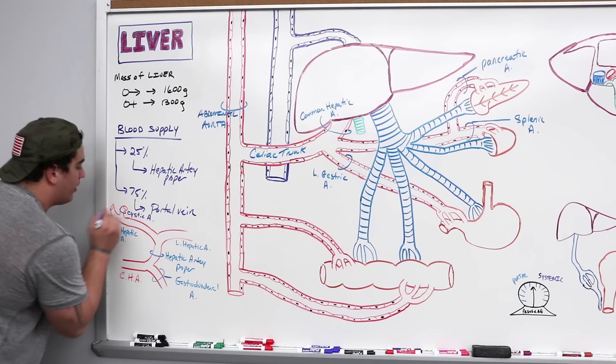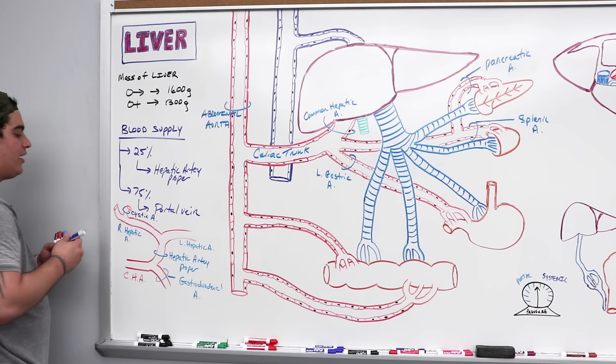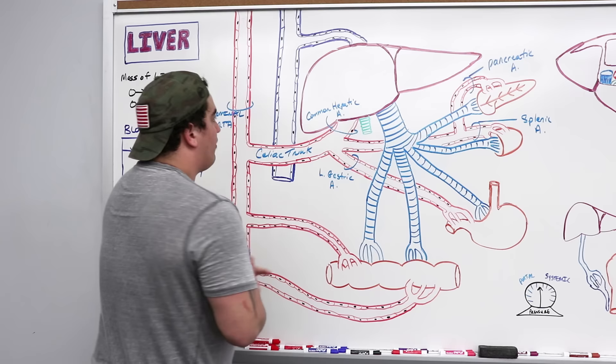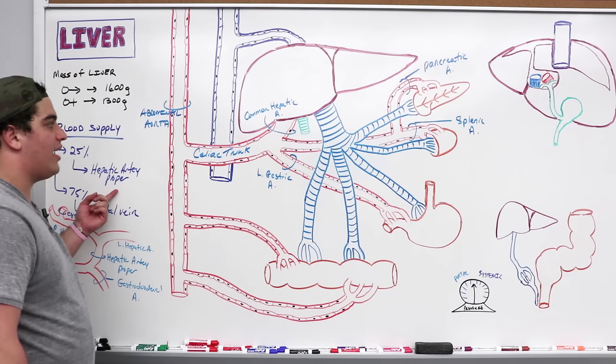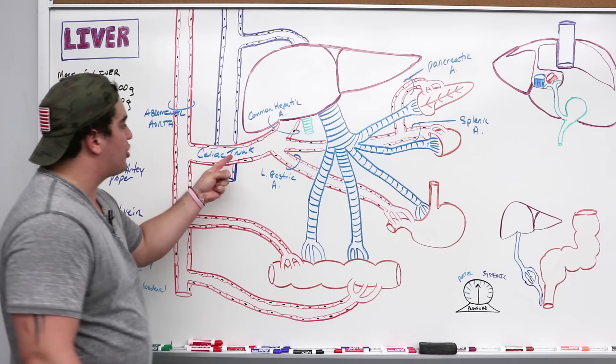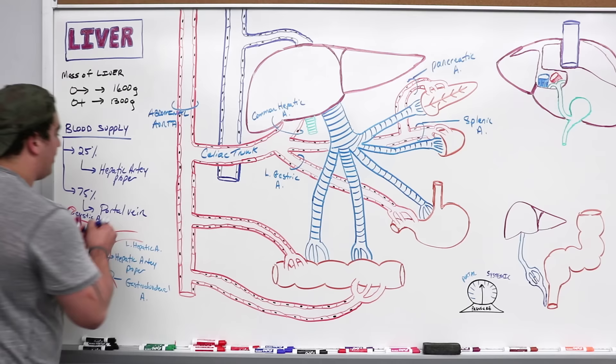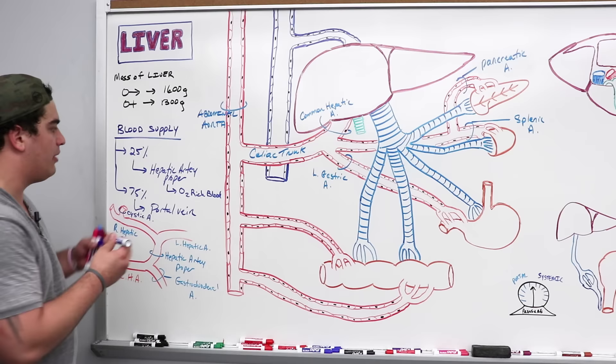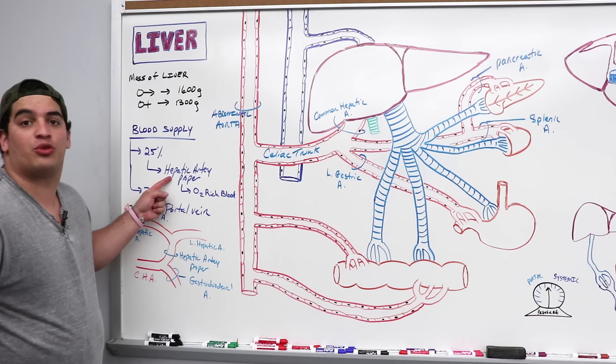To summarize the arterial supply: celiac trunk → common hepatic artery → branches into gastroduodenal artery and hepatic artery proper. The hepatic artery proper enters the liver via the porta hepatis, then branches into right and left hepatic arteries, with the cystic artery coming off the right hepatic artery. This arterial system carries oxygen-rich blood, with a partial pressure of oxygen around 100 mmHg — which is different from the portal vein.